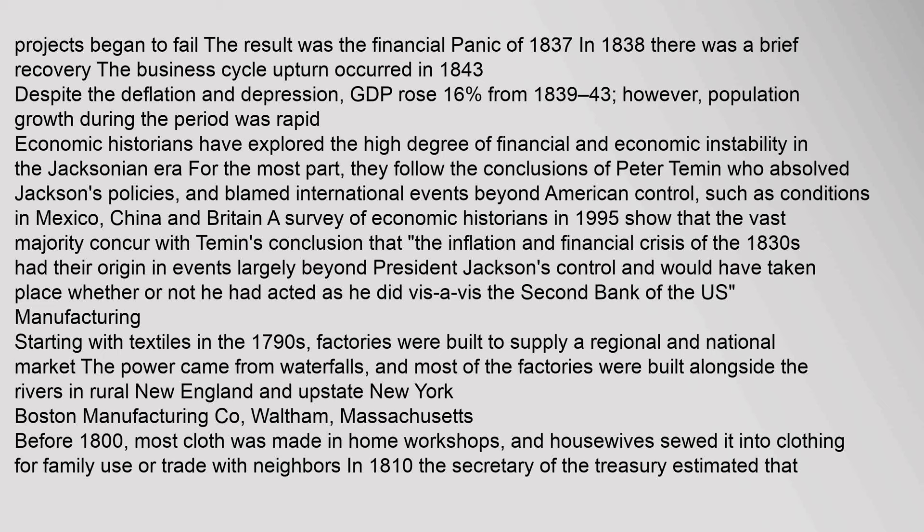Canal projects began to fail, resulting in the financial panic of 1837. In 1838 there was a brief recovery, and the business cycle upturn occurred in 1843. Economic historians have explored the high degree of financial and economic instability in the Jacksonian era. For the most part, they follow the conclusions of Peter Temin, who absolved Jackson's policies and blamed international events beyond American control, such as conditions in Mexico, China and Britain. A survey of economic historians in 1995 showed that the vast majority concurred that the inflation and financial crisis of the 1830s had their origin in events largely beyond President Jackson's control.